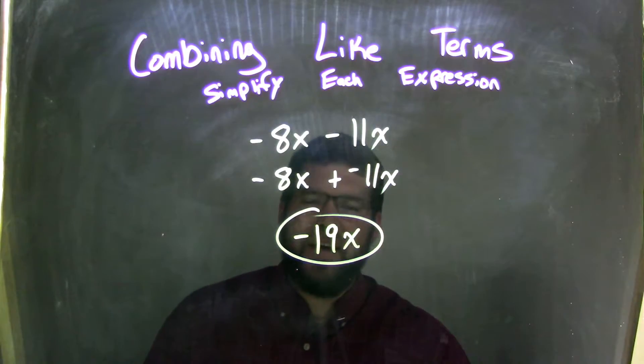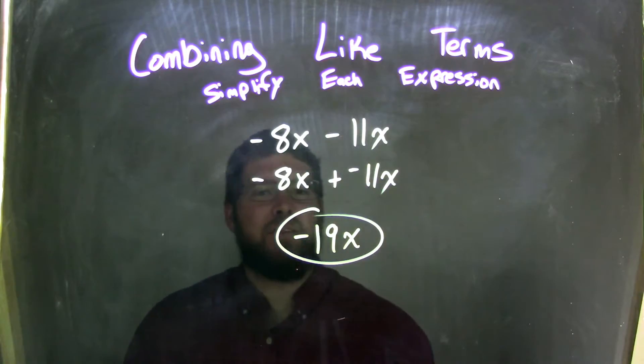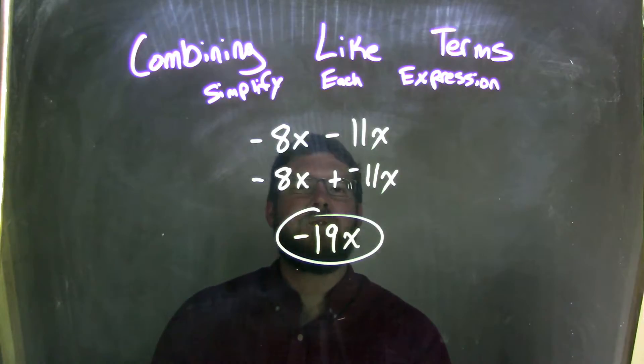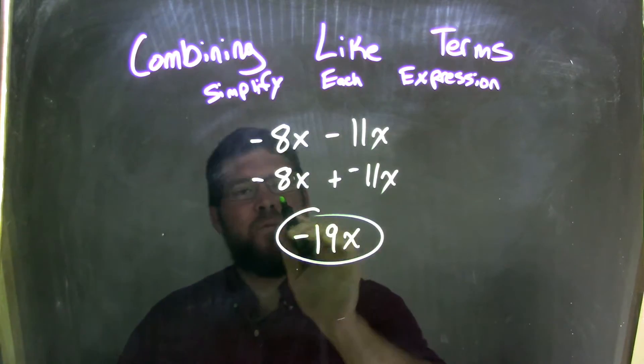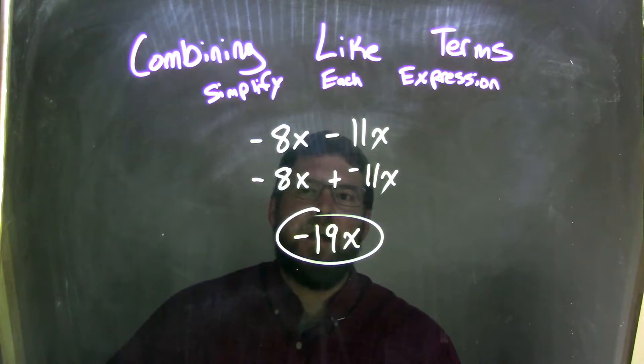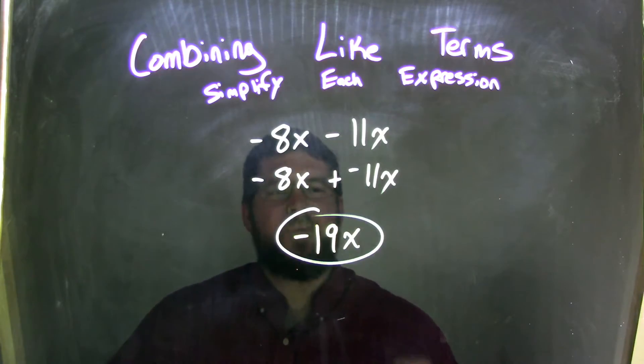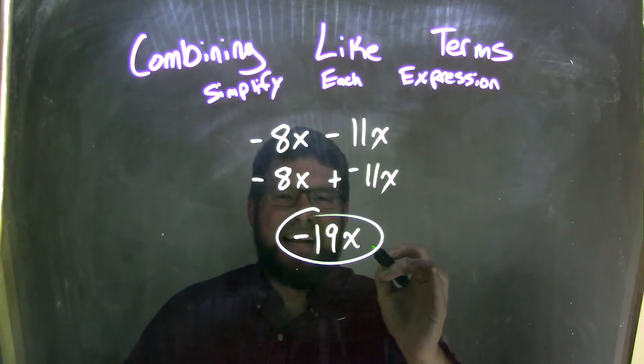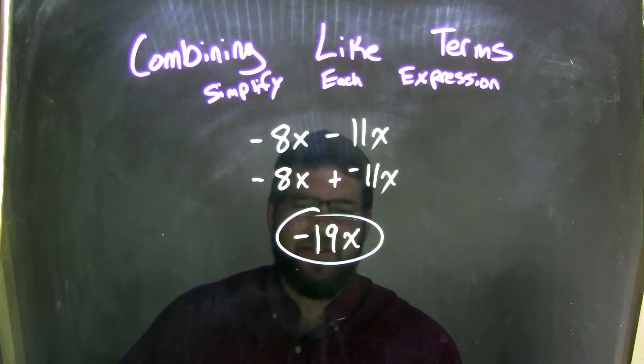So let's recap. We started with negative 8x minus 11x. I knew that subtraction was the same thing as adding a negative, so I rewrote this to be negative 8x plus a negative 11x. Now knowing that 8 plus 11 is 19, negative 8 plus a negative 11 is a negative 19, I then know that negative 8x plus a negative 11x is a negative 19x, which is our final answer.